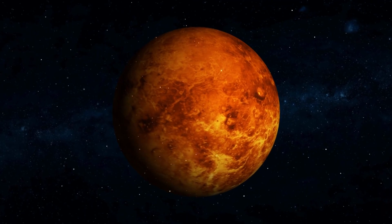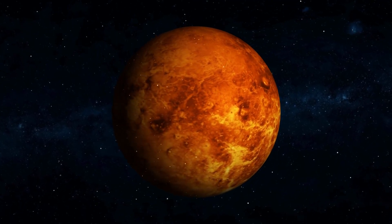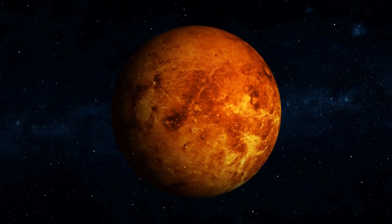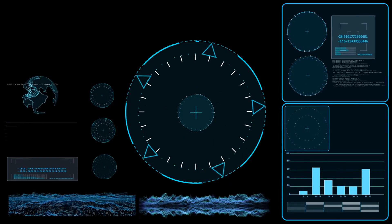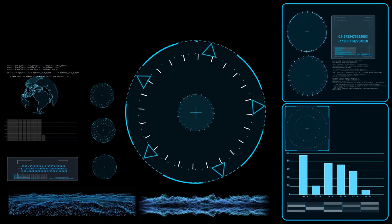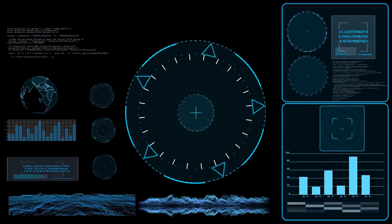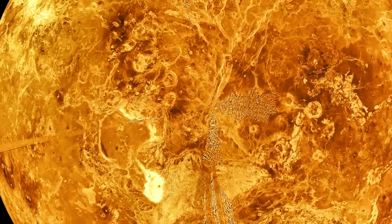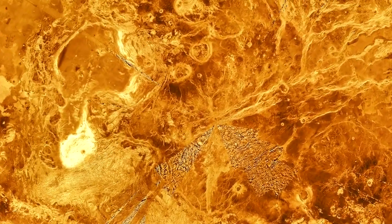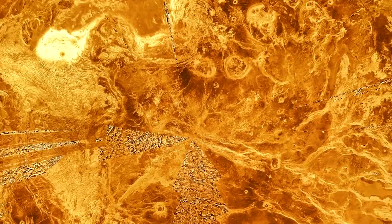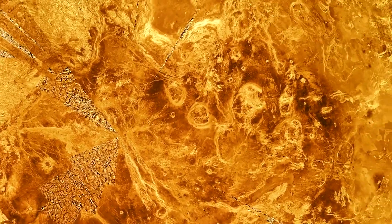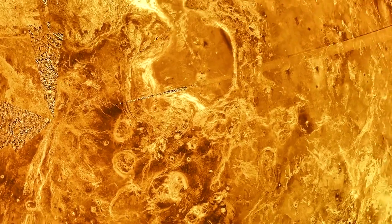Veritas is focused on mapping Venus's surface with unprecedented accuracy using a suite of advanced instruments. By employing radar and spectroscopic techniques, Veritas aims to create detailed topographic maps and analyze surface composition. This comprehensive mapping effort will help scientists understand Venus's geology, identify potential volcanic hotspots, and uncover clues about past and present geological processes.